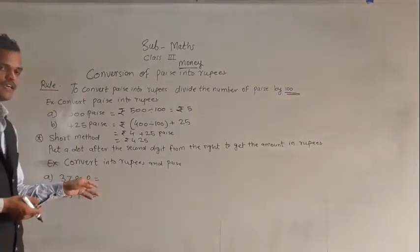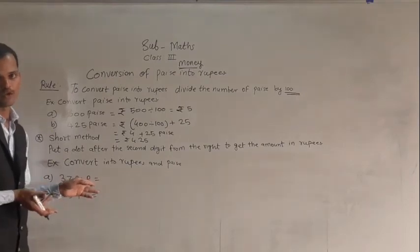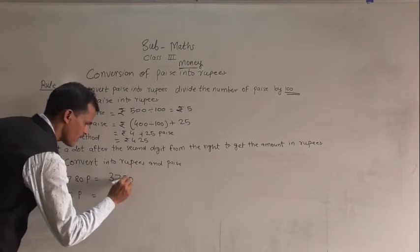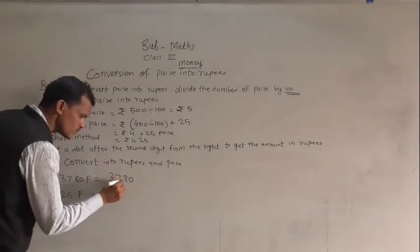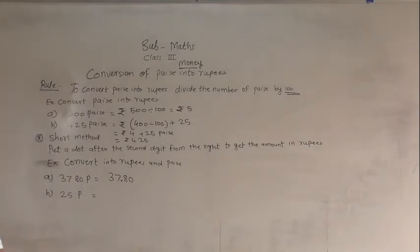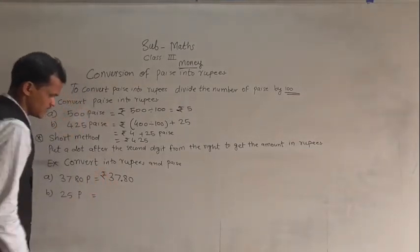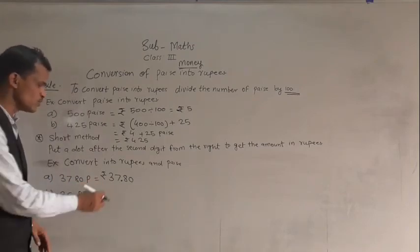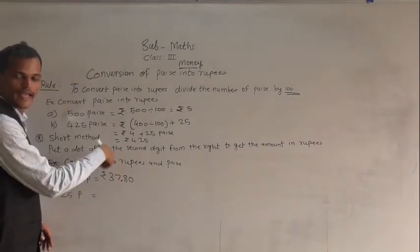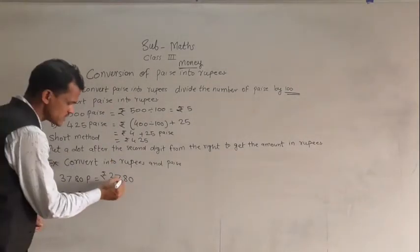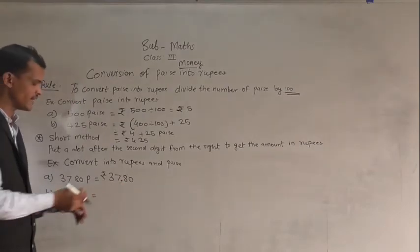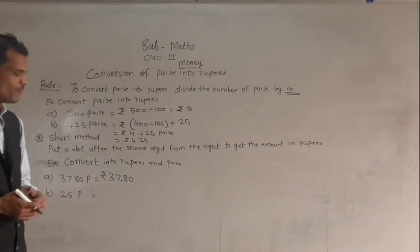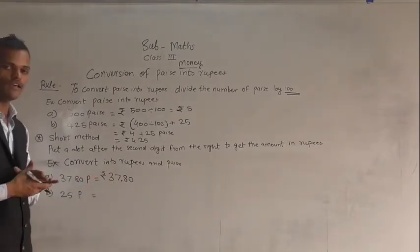So here, 3785 paise — convert into rupees and paise. Write the amount 3785 and after 2 digits from the right, give a point or dot and write the rupees sign. So 3785 paise is equal to 37 rupees and 85 paise. The digits before the point are rupees and after the point are paise — so this amount is 37 rupees and 85 paise.